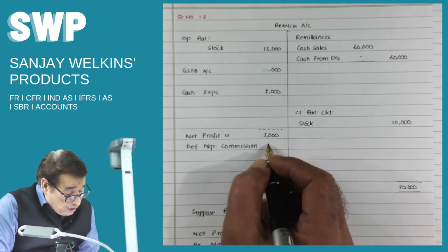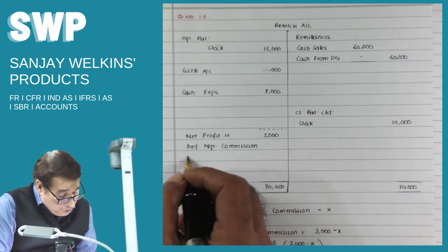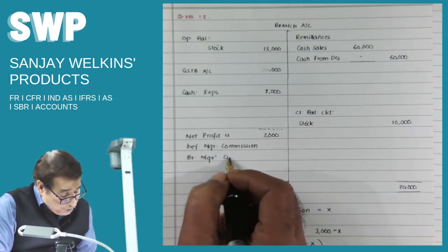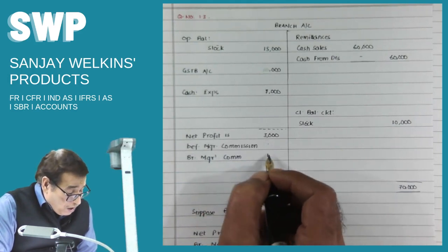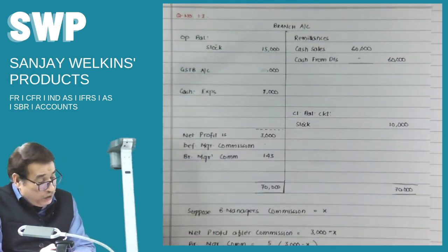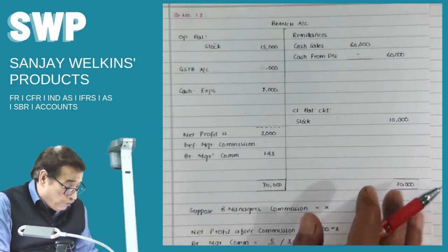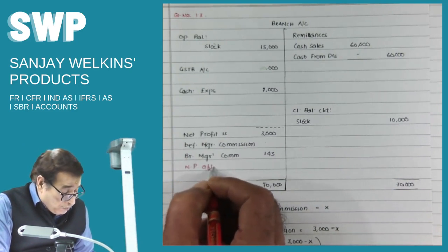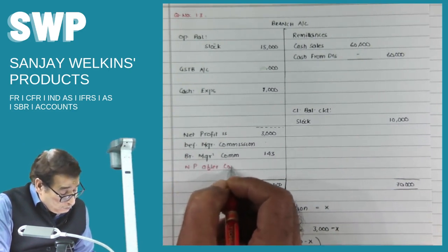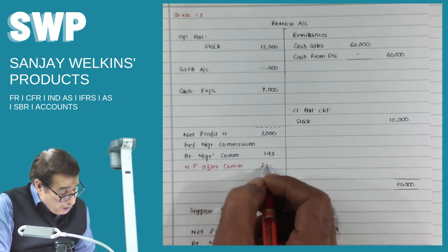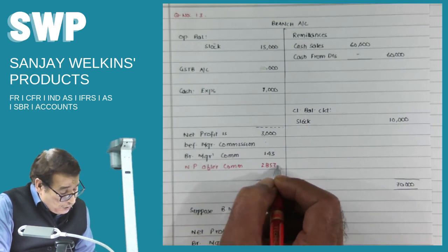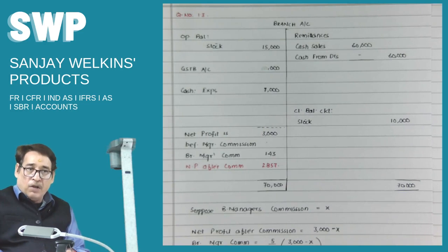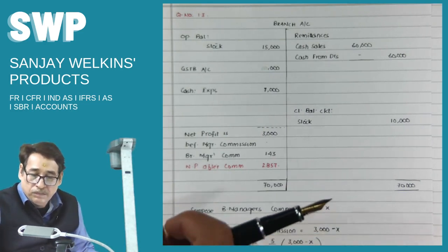From net profit before commission of 3,000, subtract branch manager's commission of 143. Net profit after commission = 2,857. We will continue with more interesting facets of this chapter in the upcoming session.